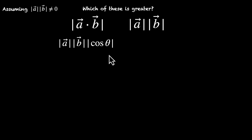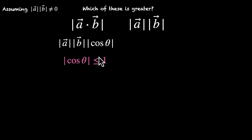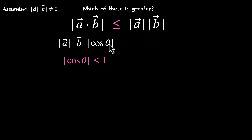Will cos theta make the left-hand side greater or less than the right-hand side? Think about it. Cos theta will never have values more than 1. In fact, cos theta ranges from minus 1 to 1, so mod of cos theta will be from 0 to 1. This means mod of cos theta will always be less than or equal to 1. Because we're multiplying by something that's less than or equal to 1, we're bringing the left side down. So the left-hand side will always be less than or equal to the right-hand side, for any value of cos theta.